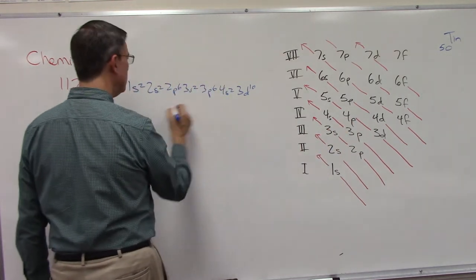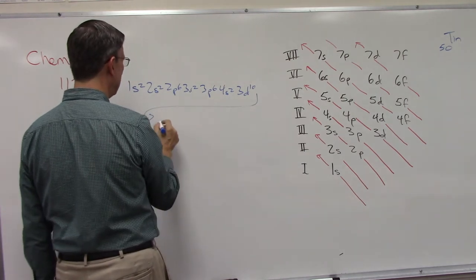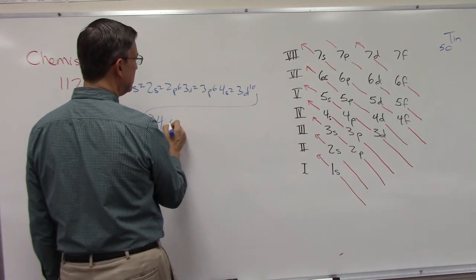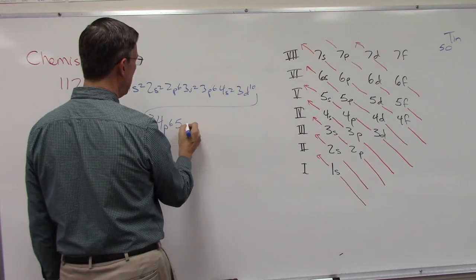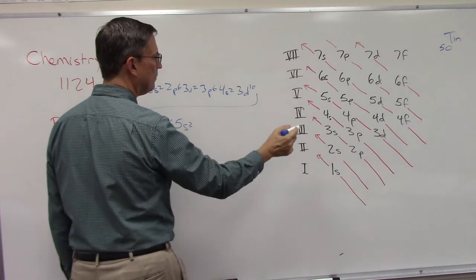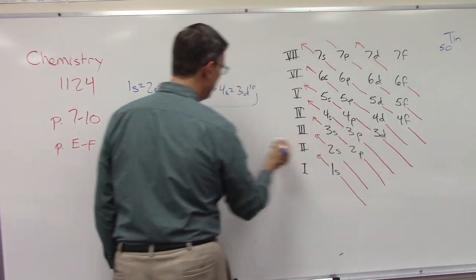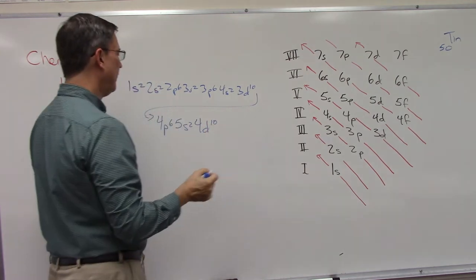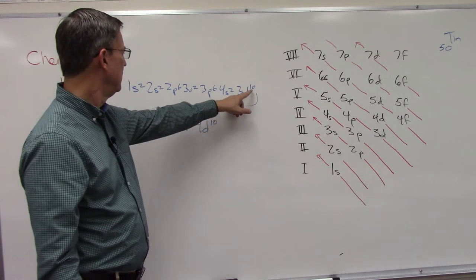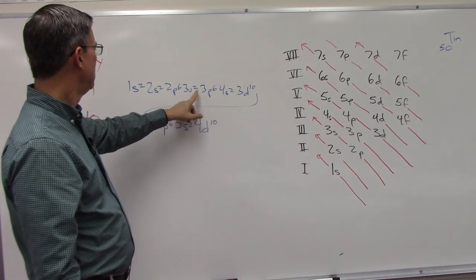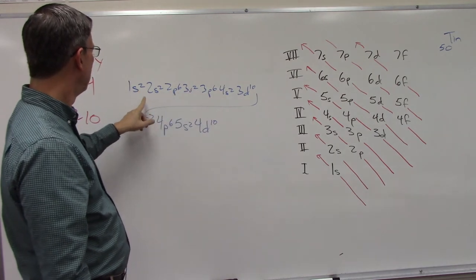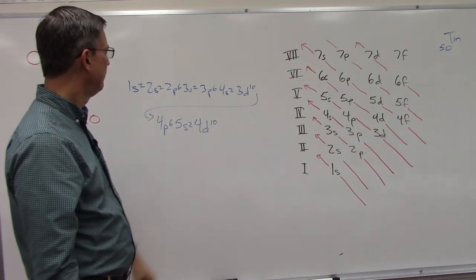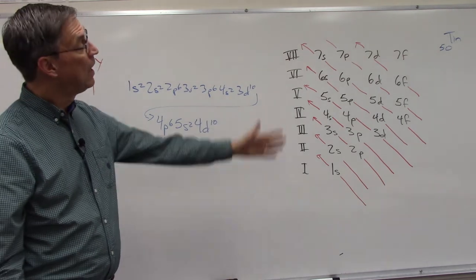Then we come back and we do 4p which is 6. And then we do 5s2 and then we go back out here and do 4d10. Let's see how far we've gotten now. We have 30 to there, 40. Oh we're getting close. I have 48. You see that? Six and two, ten and 48. So how many more do I need? I only need two more electrons and I'll have the 50.